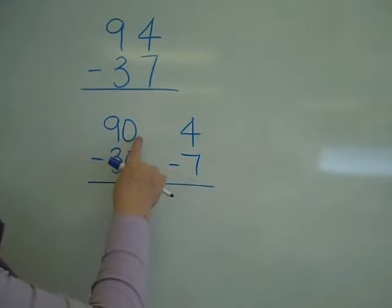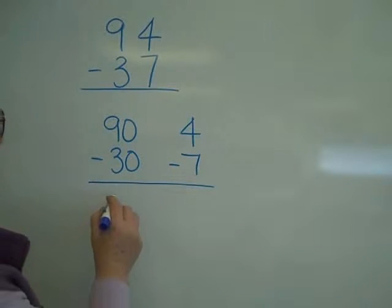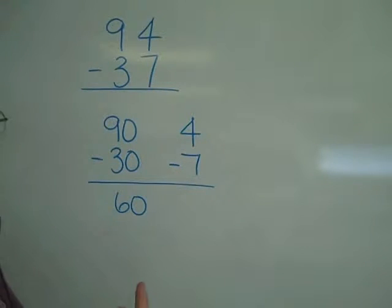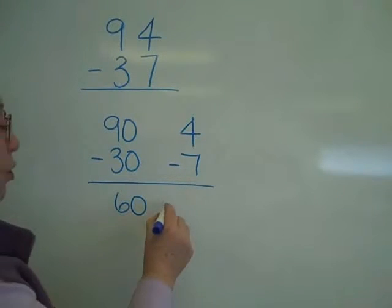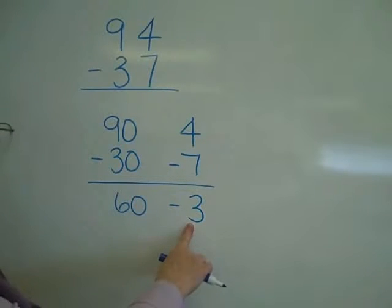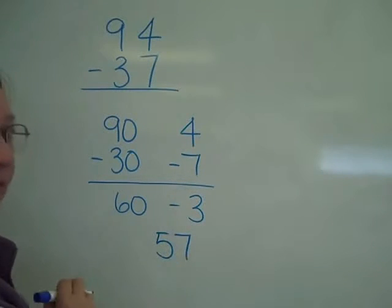So what I actually have, 90 minus 30, we love subtracting the zeros again, is 60. 4 minus 7, you're right, we've got a problem. Think of if you have $4 and you spent 7, you went in the hole $3. And that's exactly what you write. You put in that you still have to subtract 3. So 60 minus 3 leaves you an answer of 57.